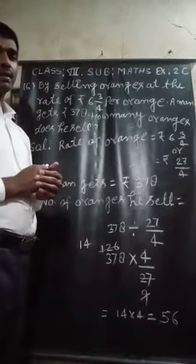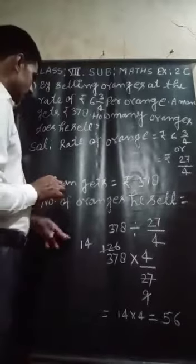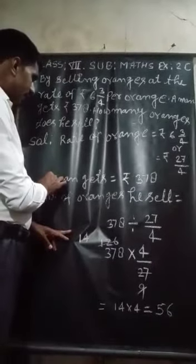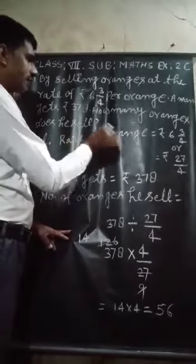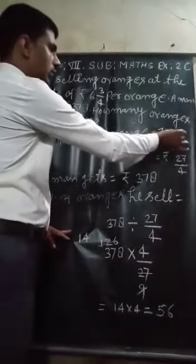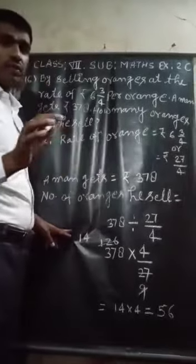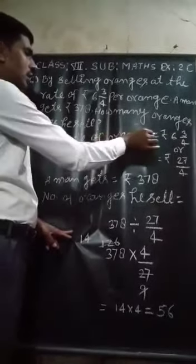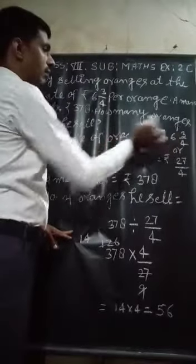So, let us come in solution section. In solution section, first of all, we have to write rate of orange equal to Rs. 6 whole 3 upon 4.